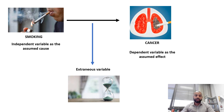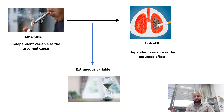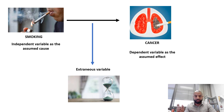The second extraneous variable is the duration for which one has been smoking. If one person has been smoking for 10 years and got cancer, and another has been smoking for only one year and still got cancer, was it because of smoking or some other reason? How does the time period of smoking play a role in causing cancer — does someone need to smoke for 10 years to get cancer, or can one year be enough?